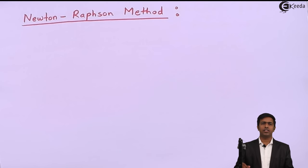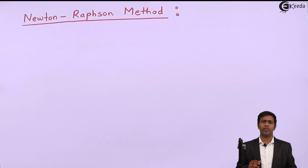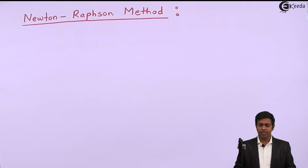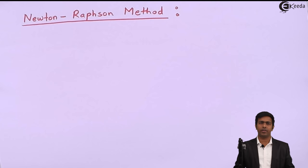Hello friends. Today in this video I am going to teach you a method by which you can find out the approximate root of any given equation, and that method is called the Newton-Raphson method. If you have been given a quadratic, cubic, or some higher degree equation and you want to find out the root of that equation, then by using Newton-Raphson method we can get the root.